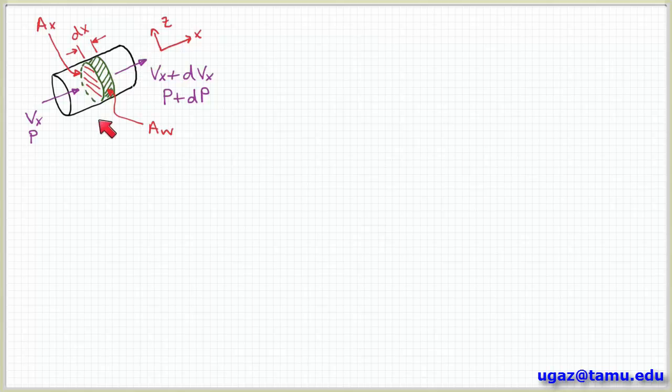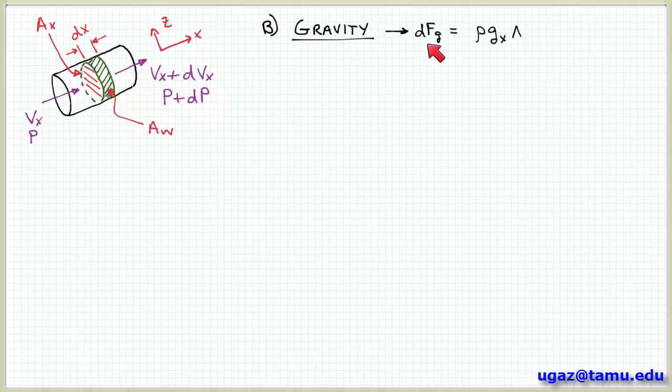And so now we're looking at the sum of the forces on this control volume. So we found one already which was the net pressure force acting on this control volume. So now we're going to look at another force, gravity. And so the net gravity force is equal to ρg_x times the volume.